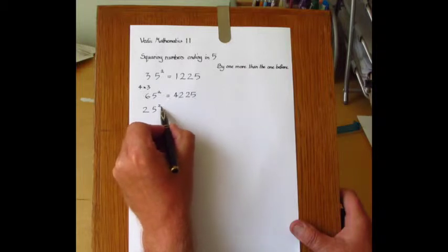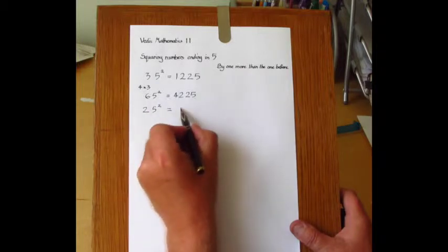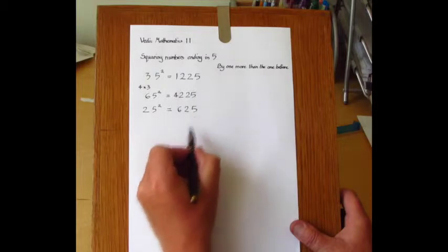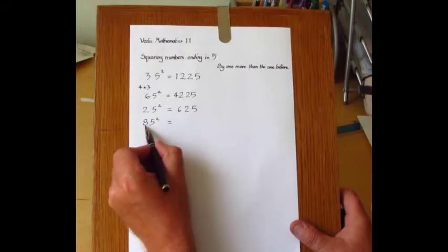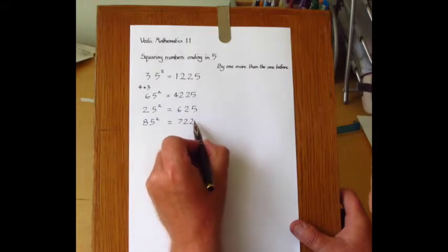25 squared: 2 times 3 is 6, and put down 25, giving 625. 85 squared: 8 times 9 is 72, so it's 7225.